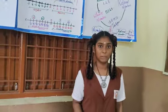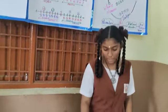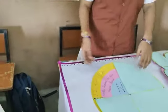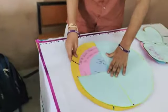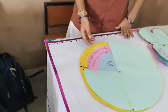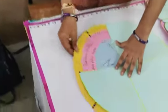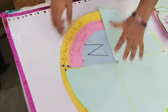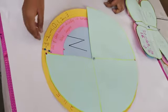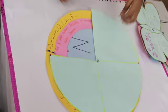Before we know rational numbers, we know that counting numbers are called natural numbers. Example: 1, 2, 3, etc. Natural numbers along with 0 are called whole numbers. Example: 0, 1, 2, 3, etc. Positive numbers with their negative counterparts are called integers. Example: minus 3, minus 2, minus 1, 0, 1, 2, 3, etc.